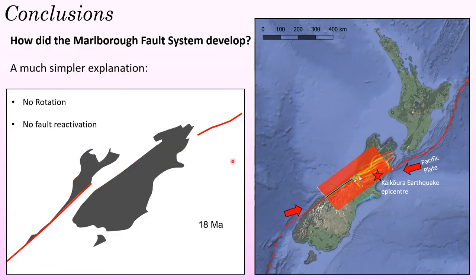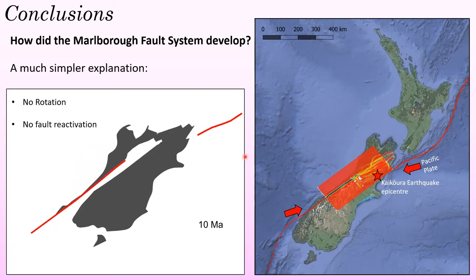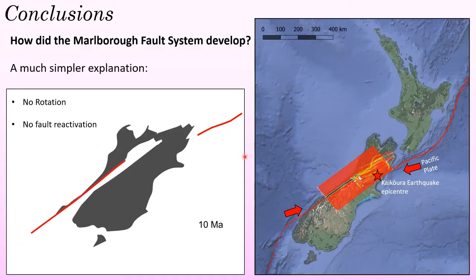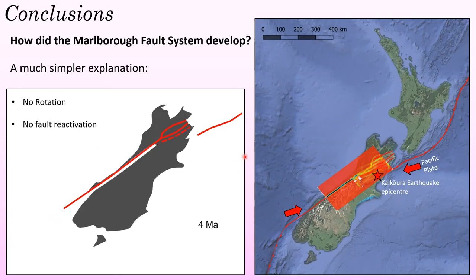This likely means that the Marlborough fault system developed in a much simpler manner than previously hypothesized. As these two major plate boundaries propagated towards each other over the last 20 million years, northeast South Island did not rotate, but remained in place until these plate boundaries were close enough to generate distributed deformation between them. This distributed deformation caused the Marlborough fault system to develop sequentially from north to south, and this model can be applied to other plate boundary transition zones across the globe.